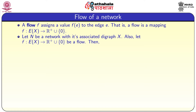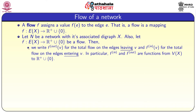Let N be a network with its associated digraph X, and let f be a mapping from the edge set of X to R-plus union 0. We write f-out(v) as the total flow on edges leaving v, and f-in(v) as the total flow on edges entering v. Note that f-in and f-out are functions from the vertex set to non-negative real numbers, whereas f is a mapping from the edge set.